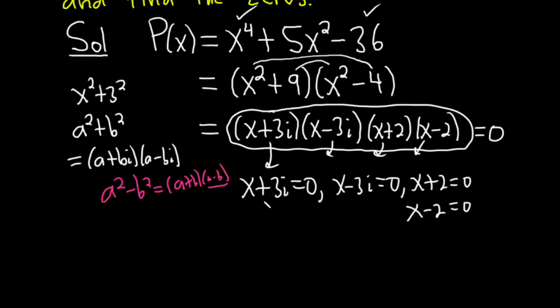And so you're going to get from here, you're going to get negative 3i. You subtract it. Here you add the 3i, so you get a positive 3i. Here you subtract 2, so you get negative 2. Here you add 2, so you get a positive 2. So we have four zeros.